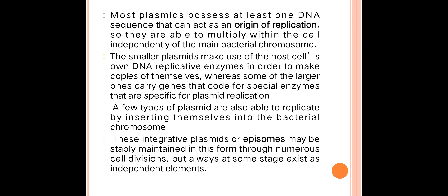Most plasmids possess at least one DNA sequence that can act as an origin of replication, so they are able to multiply within the cell independently of the main bacterial chromosome. Autonomous replication is mainly due to the presence of this origin of replication. Smaller plasmids make use of the host cell's own DNA replicative enzymes to make copies of themselves, whereas some of the larger ones carry genes that code for special enzymes specific for plasmid replication. A few types of plasmids are also able to replicate by inserting themselves into the bacterial chromosome — these are called integrative plasmids or episomes.